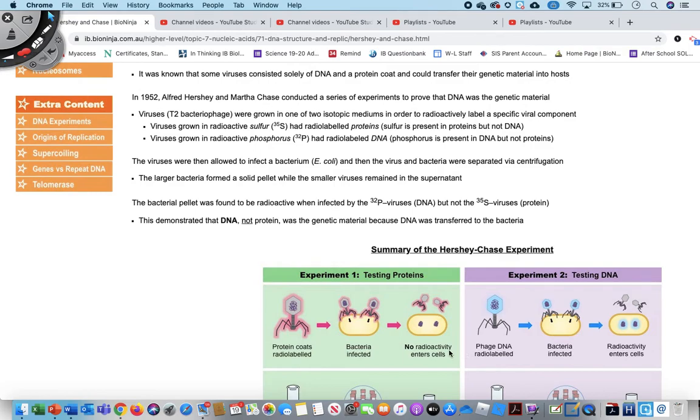So then what ended up happening was the following. There was no radioactivity inside the cells of the bacteria. So that means that whatever the virus infected the bacteria with, it was not the protein, right? Because the protein was radioactively labeled. And in experiment two, they did find radioactivity. So since they had labeled the DNA with the radioactive phosphorus-32 and they found radioactivity in the cells, they could determine with evidence that what was being transferred from the virus into the bacteria was the DNA.